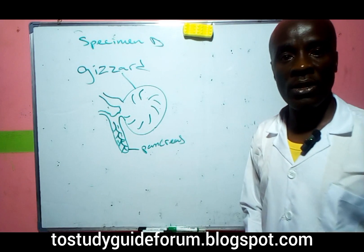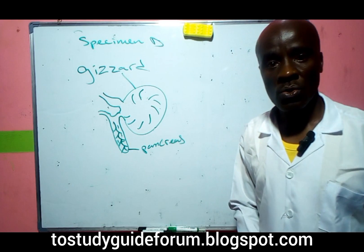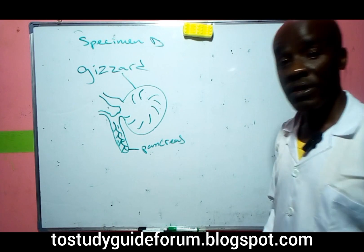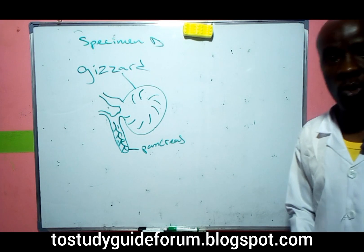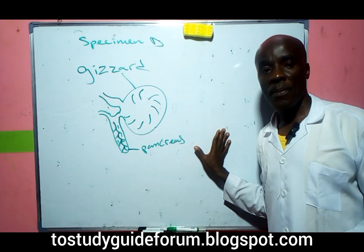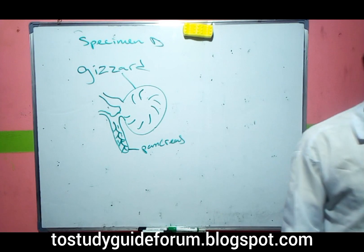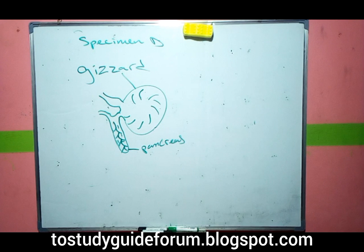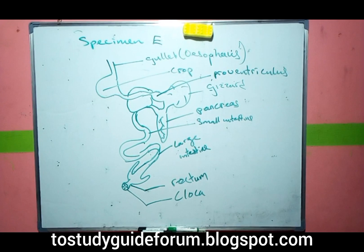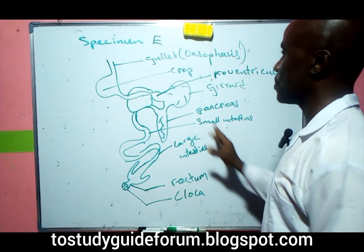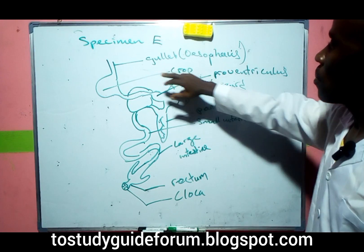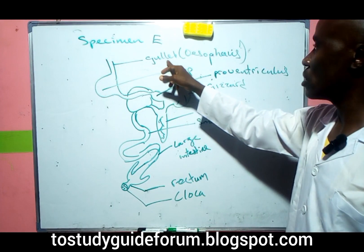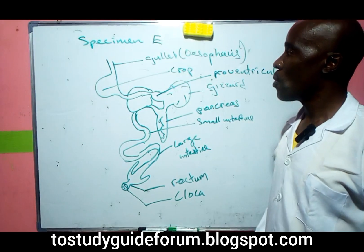Now we look at the final specimen in this video: the intestine of a bird. Coming down we have the oesophagus or gullet, then the crop.